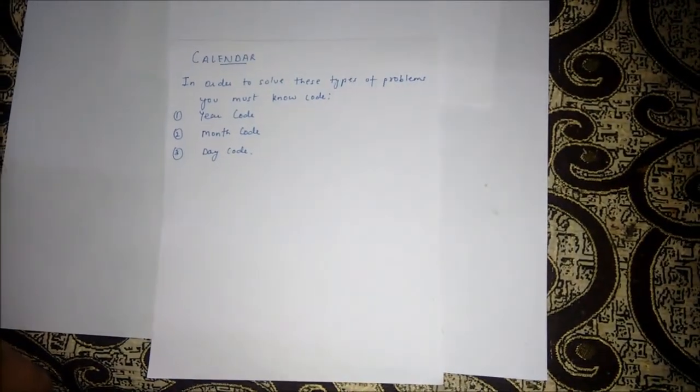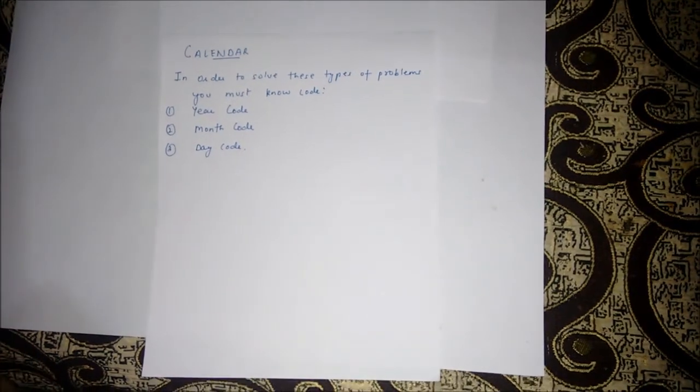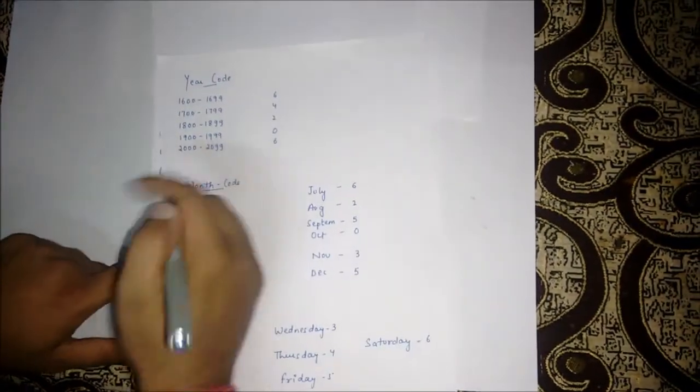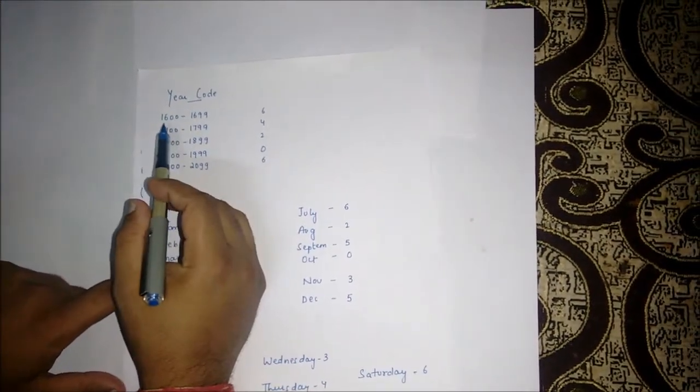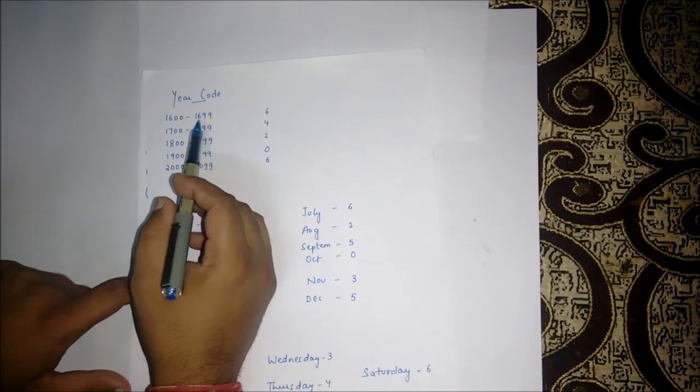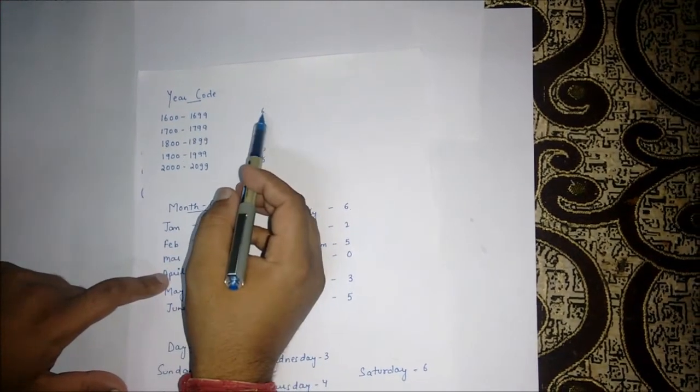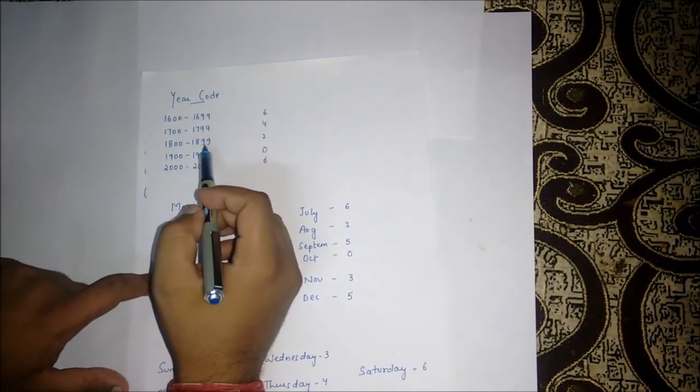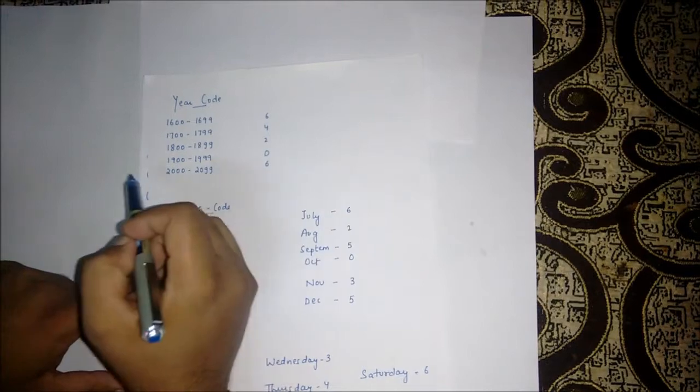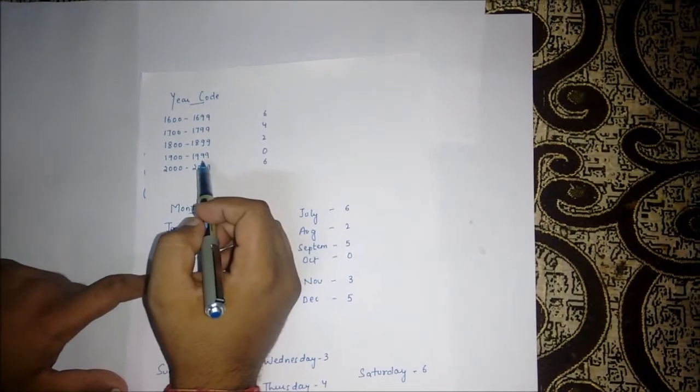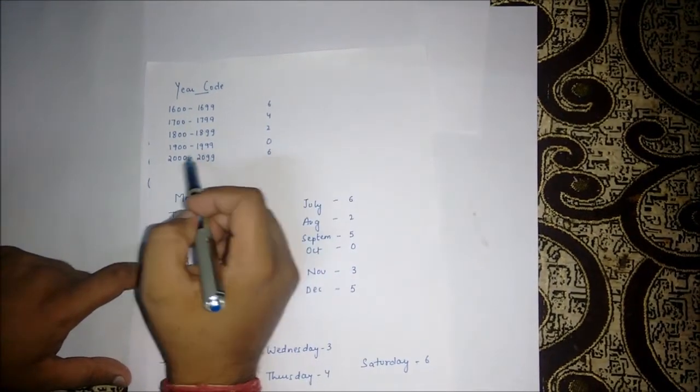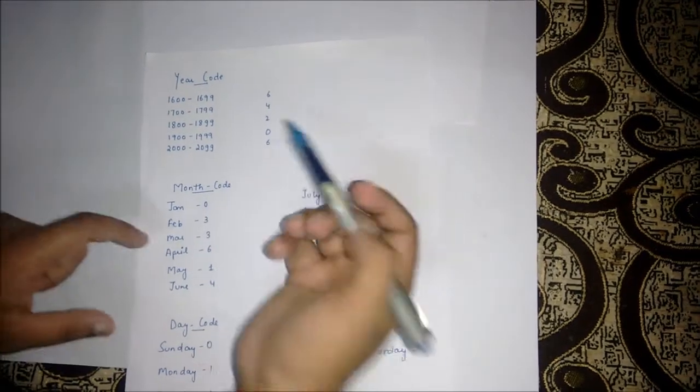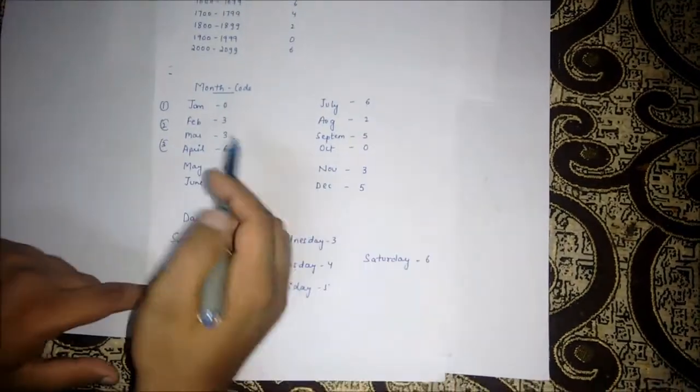These codes have corresponding values. For year code: 1600 to 1699 is 6, 1700 to 1799 is 4, 1800 to 1899 is 2, 1900 to 1999 is 0, and 2000 to 2099 is 6.